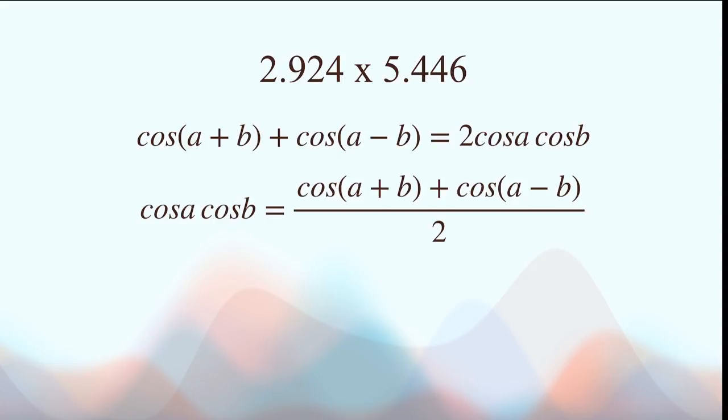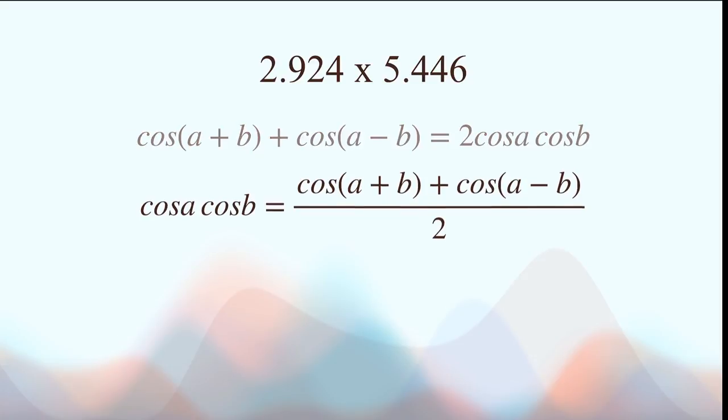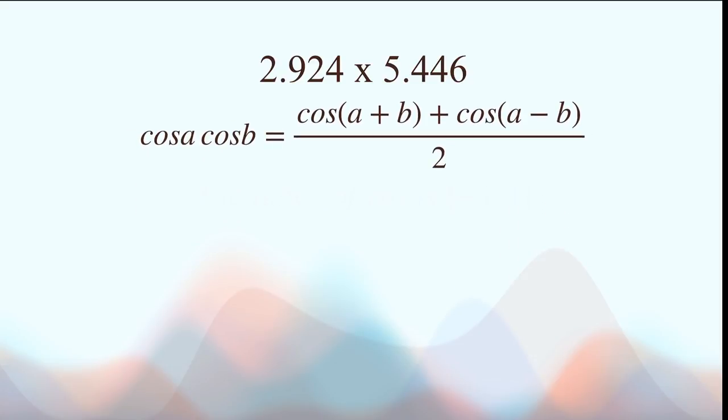And I will show you how it works with the example of 2.924 times 5.446. First note that the range of cos is negative 1 to 1 inclusive. So we must turn our product to be something of that range, which can be done by extracting out the tens here.